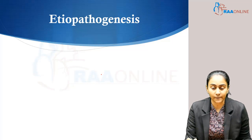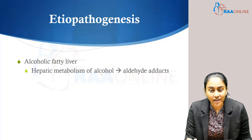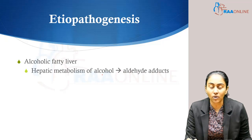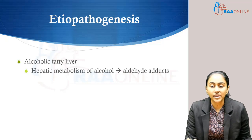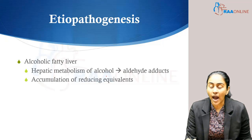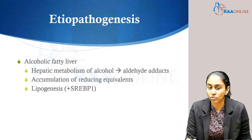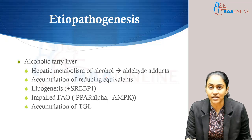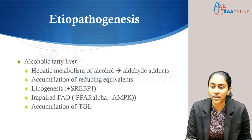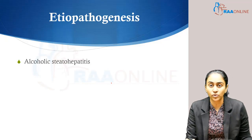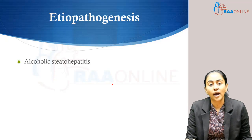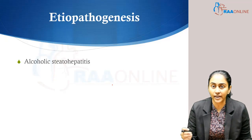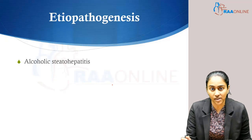Now let's look at etiopathogenesis. In alcoholic fatty liver, as we just saw with ethanol metabolism, there is formation of acetaldehyde and accumulation of reducing equivalents. Downstream this results in lipogenesis and impaired beta fatty acid oxidation, which eventually leads to accumulation of triglycerides — causing the fatty liver that is the first finding in a patient with alcohol related liver disease.